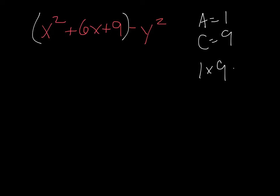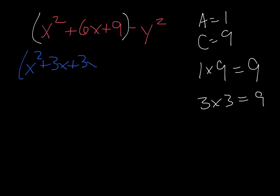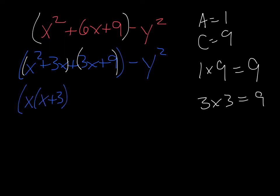One times nine is nine, and we're thinking of factors of nine that can combine to give us six. The only way we can move forward on this kind of problem is if we can make this trinomial into a perfect square, so the only factor pair that would work is three times three. We're going to use that to rewrite this as x squared plus three x plus three x plus nine, and then keep our minus y squared. We group the first two and the second two and factor out a greatest common factor — out of the first we take an x and are left with x plus three, and out of the second we take a positive three and are left with x plus three.